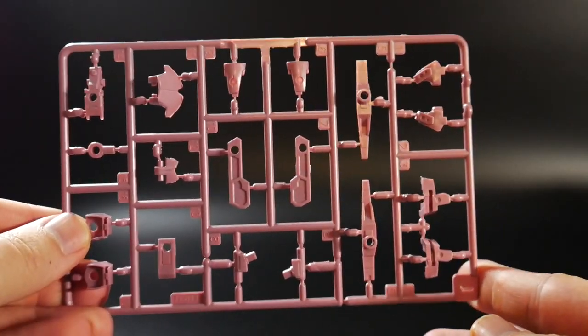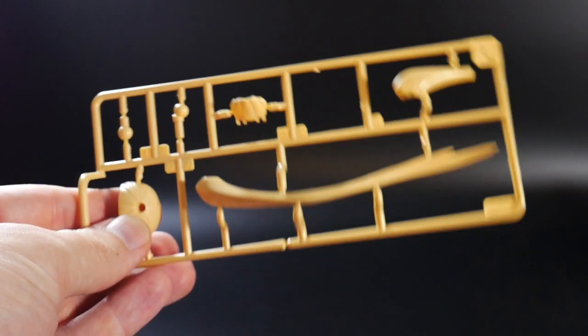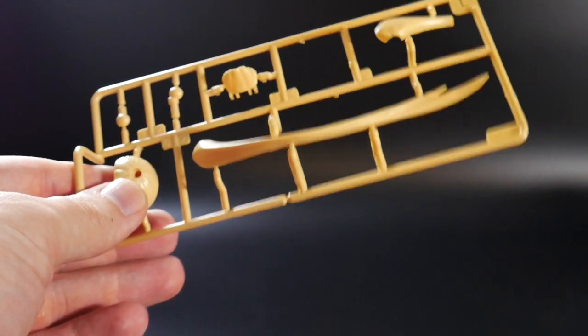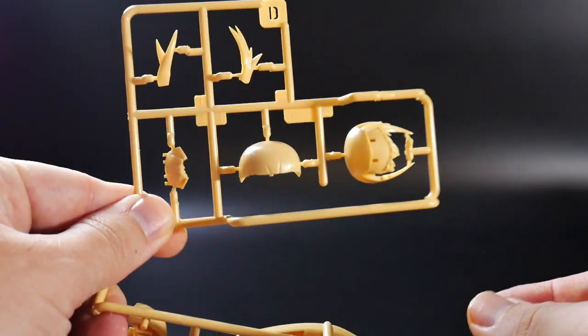You have runner J which is more parts for random places on the body. And here's runner L which is yellow, obviously going to be for the hair. And you're also going to have runner D which is going to be for the hair as well.